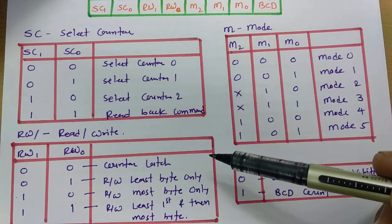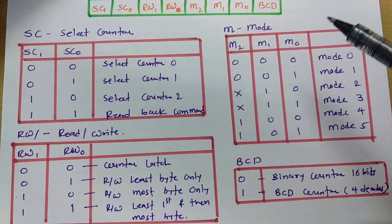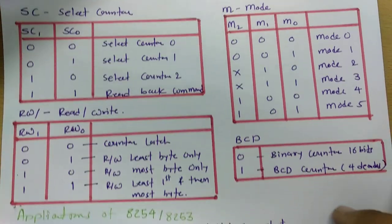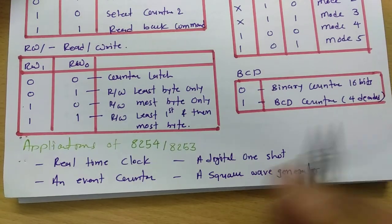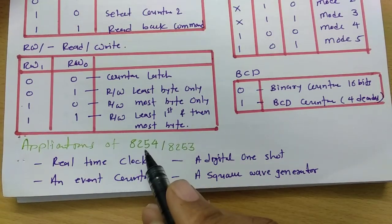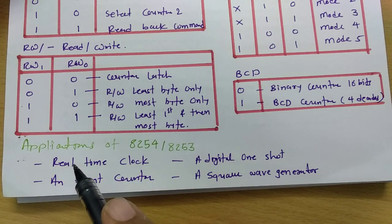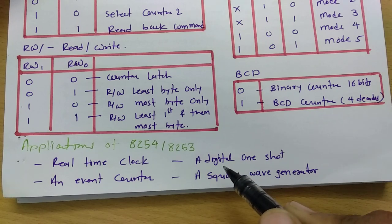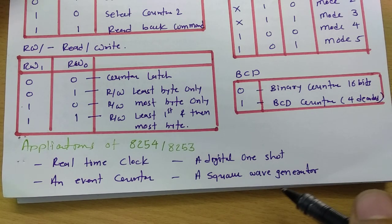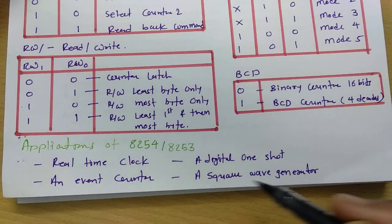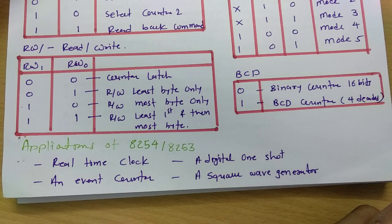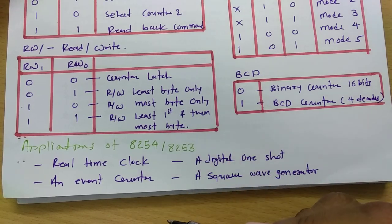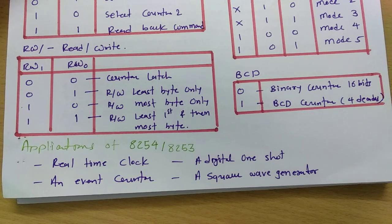This concludes the control register of 8254 and 8253. The major applications of 8254 and 8253 include: real-time clock, event counter, digital one-shot, and square wave generator. Many basic-level projects have been built using these ICs.